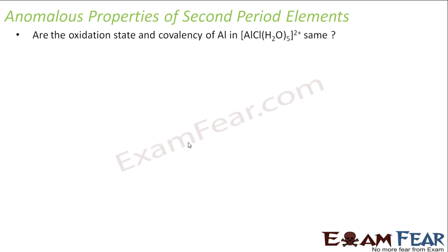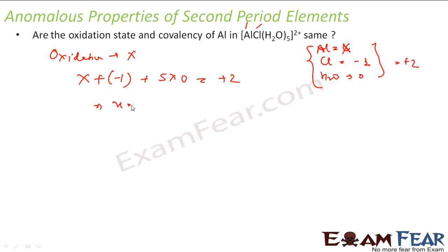We'll take some examples now. Are the oxidation state and covalency of Al in AlCl(H2O)5^2+ same? So, let's write oxidation state first. And let's assume oxidation state is x. Oxidation state of aluminum is x. Chlorine is minus 1. Water is 0 because it's a neutral molecule. And the whole oxidation state total is plus 2. So, let me add this x for aluminum, 1 aluminum plus 1 chlorine minus 1 plus 5 into water molecule 0. Total is plus 2. So, if you solve this, you get x is equal to plus 3. So, the oxidation state of aluminum is plus 3.